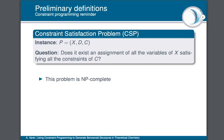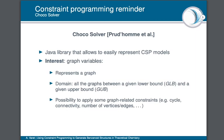Let's begin with a little reminder about constraint programming. We call a Constraint Satisfaction Problem, or CSP, a set of three values X, D and C for variables, domains and constraints. Solving a CSP is equivalent to checking if there exists an assignment of all the variables of X with the values of D which satisfy all the constraints of C. This problem is a well-known NP-complete problem.